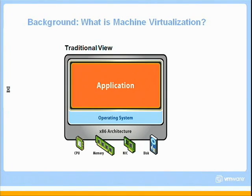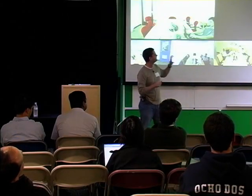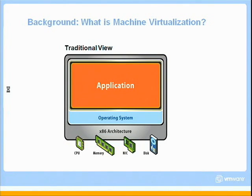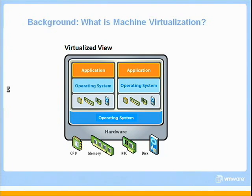Before we really dive into things, let me give you some insultingly simple pictures describing what virtualization is, just to make sure we're all on the same page. In the traditional view of how programs run, you've got hardware on the bottom, an operating system on top of that, and then applications on top of the OS. In a virtualized world, we've introduced a virtualization layer that virtualizes the hardware — the CPU, memory, NIC, disk — and presents a virtual view of that hardware to potentially multiple operating systems.